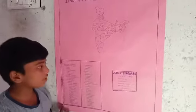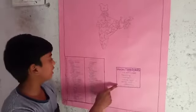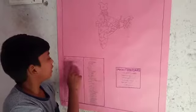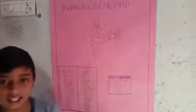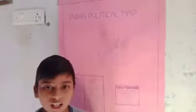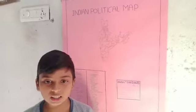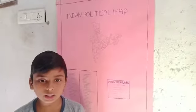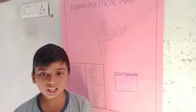In India there are 29 states and 8 union territories. Andhra Pradesh, Amaravati. Arnachar Pradesh, Haitik Nagar. Assam, Dispur. Bihar, Patna. Chendigar, Ripur. Gova, Penaji. Gujarat, Gandhi Nagar.